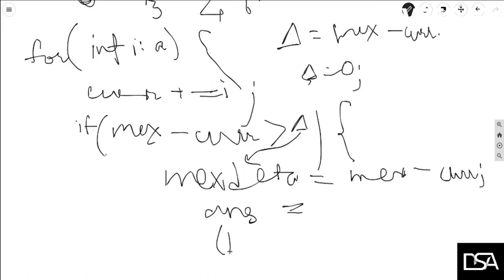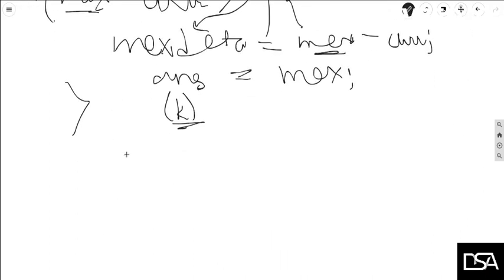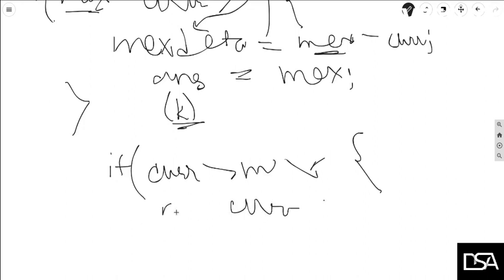So at that time we can change our max delta, this delta, to max minus current, and we can update our answer k, which is our required answer, to maximum. And we can write another condition here: if the current is greater than max, then max is equal to current.